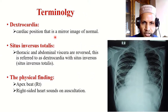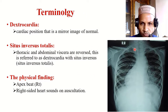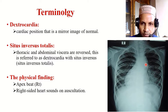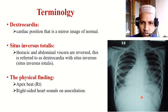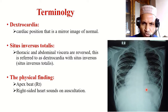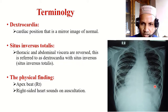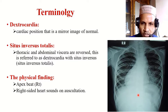Dextrocardia is a cardiac position that is a mirror image of normal. An X-ray can be done to confirm this, and an echocardiogram may be performed to evaluate cardiac status. It is also important to identify whether the abdominal viscera are also reversed using ultrasonogram. If the liver is on the left side, the spleen on the right, and all abdominal viscera reversed, it is called situs inversus totalis.